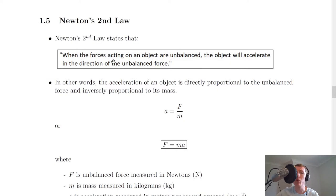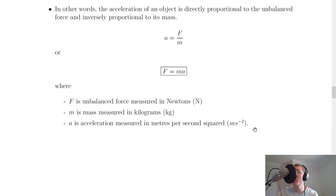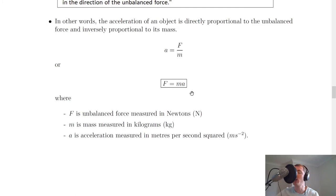Next we have Newton's second law, and Newton's second law states that when the forces acting on an object are unbalanced, the object will accelerate in the direction of the unbalanced force. In other words, the acceleration of an object is directly proportional to the unbalanced force and inversely proportional to its mass. So this means that we have a equals f over m, so acceleration is equal to the force divided by the mass, or the one that you probably most likely remember as Newton's second law is f equals ma, where f is the unbalanced force measured in newtons, m is the mass measured in kilograms, and a is the acceleration measured in meters per second squared.